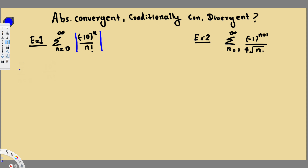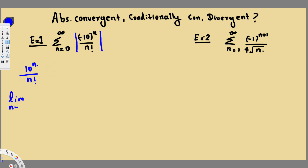Here we are going to have 10 to the power n over n factorial. Whenever you see a factorial, we can use two kinds of tests: one is the root test and the other is the ratio test. Whenever you see a factorial, the ratio test is best.